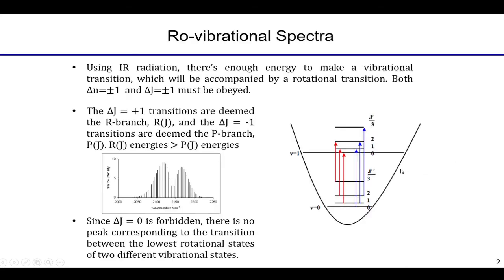Today we're going to talk about rotational spectroscopy, but we're going to focus on rovibrational spectra and try to understand where the intensities of the various peaks come from. In the previous lecture, we talked about how transitions between different vibrational states lead to two different branches in a rovibrational spectrum. We use infrared light to probe vibrational transitions, and within that vibrational transition there are different rotational transitions. J here represents the rotational transitions that are happening.